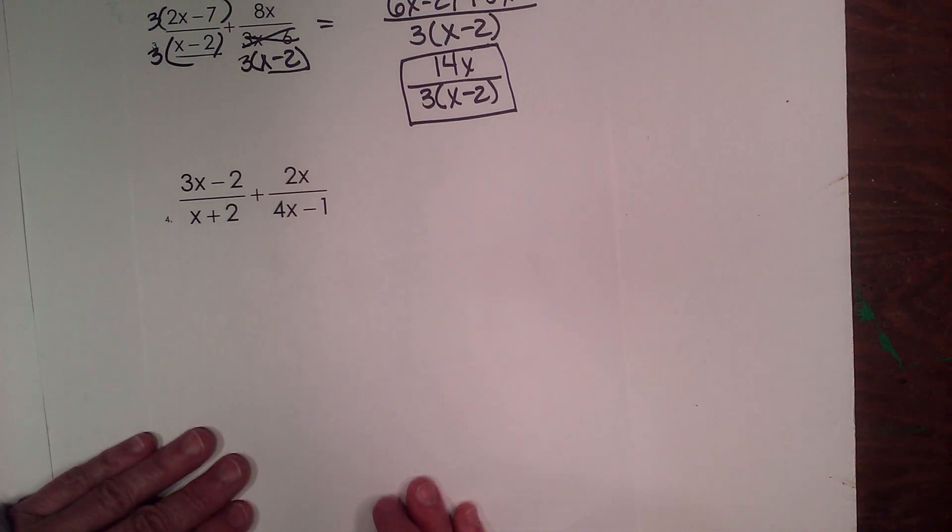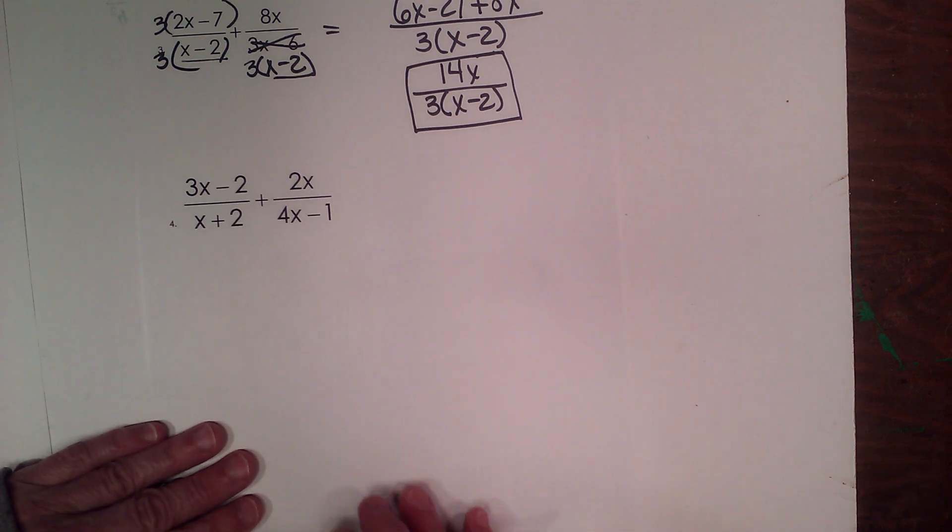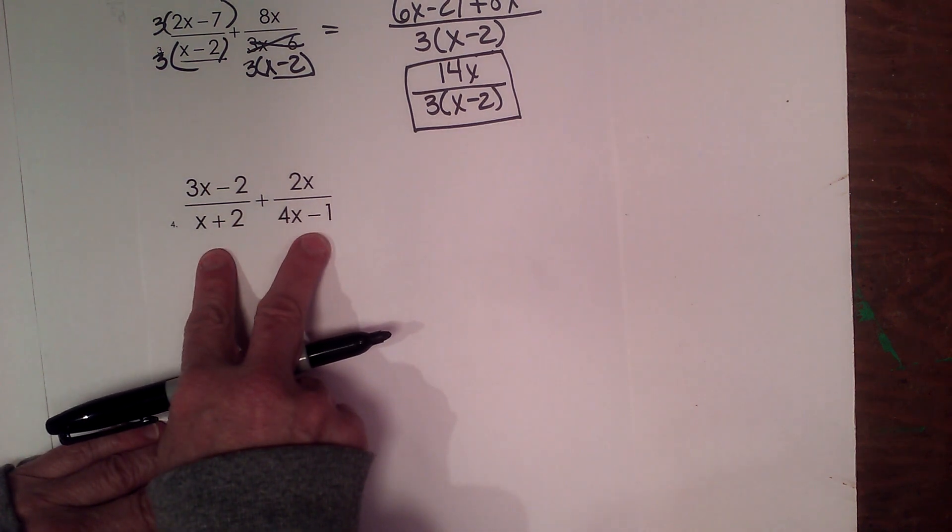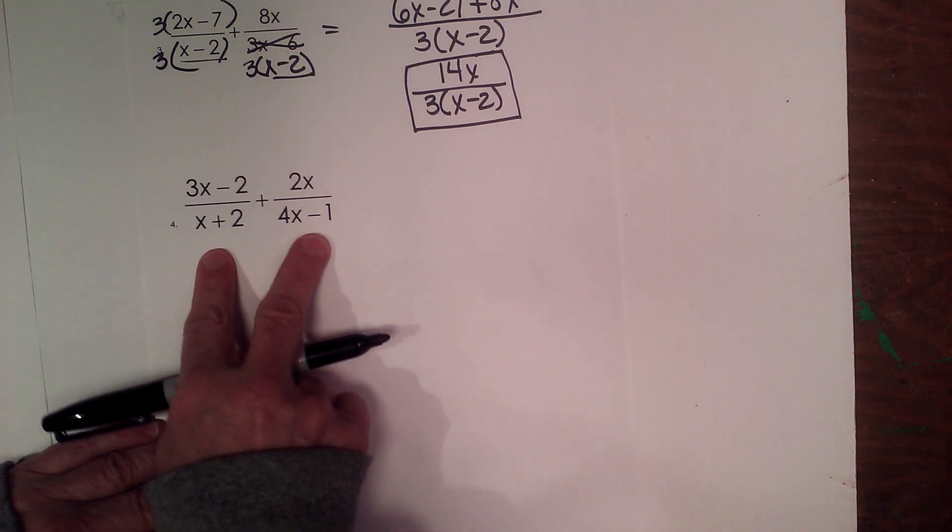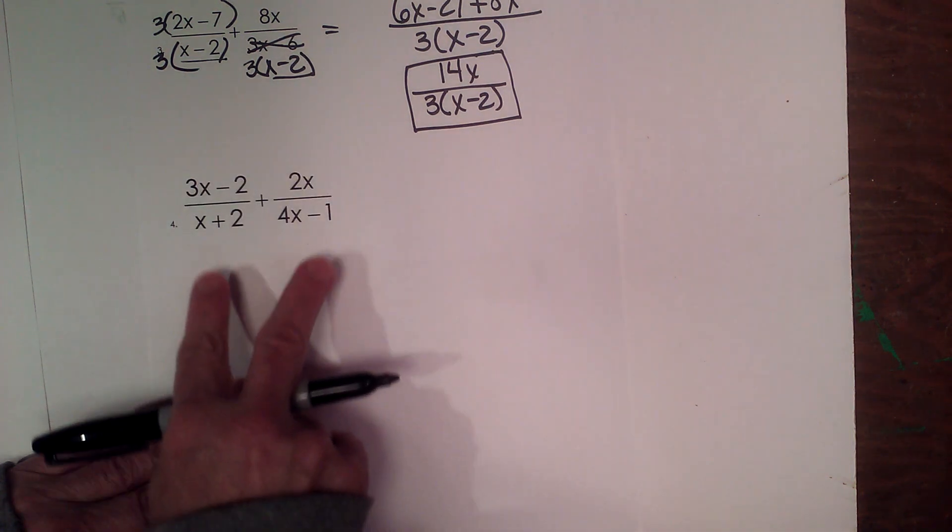So let's look at one more example of adding two expressions that don't have a common denominator. I started the first one by factoring the denominator, so let's look.